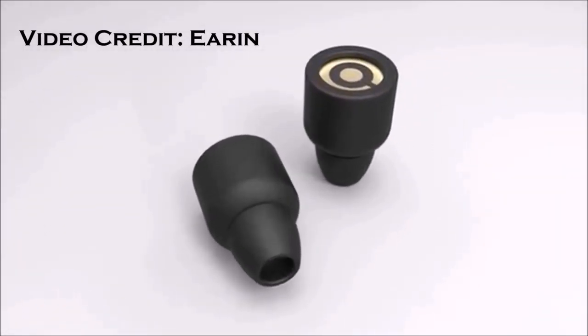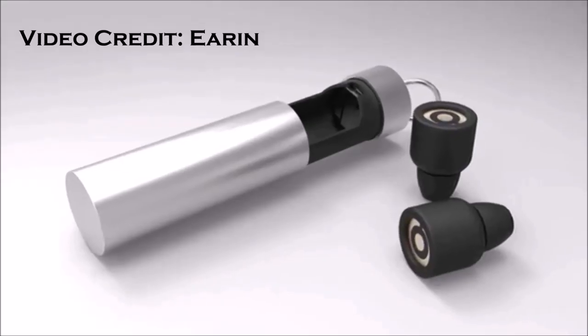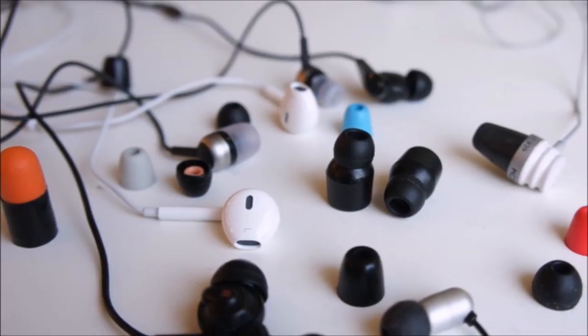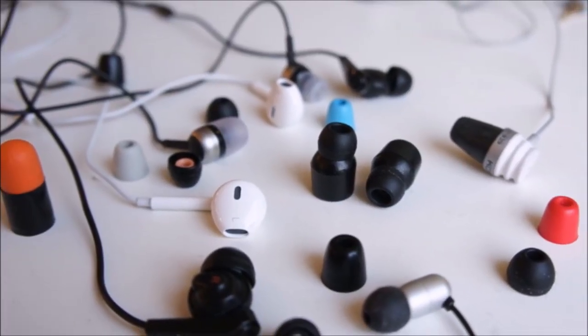The Earin Buds, as they're called, weigh 5 grams and feature a plastic casing with a silicone tip on the end that's designed to create a snug, noise-isolating fit inside the ear.